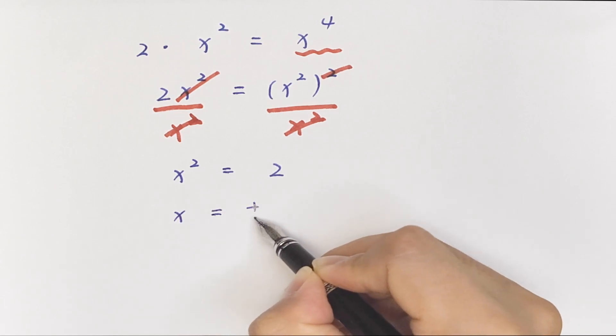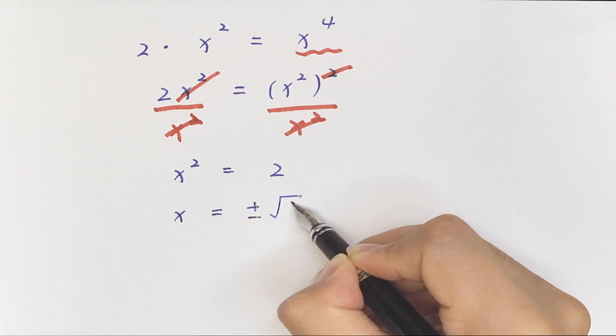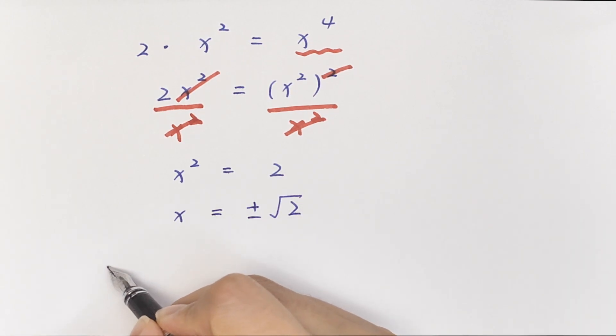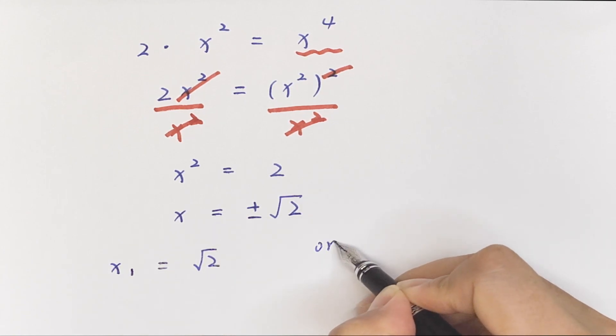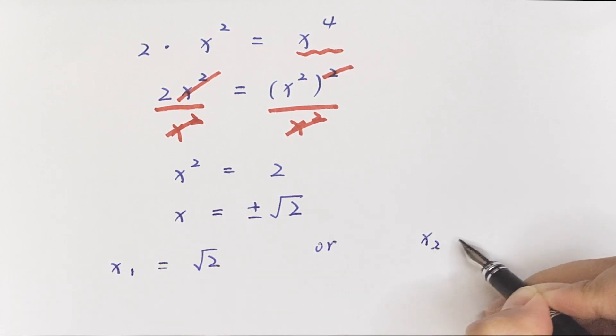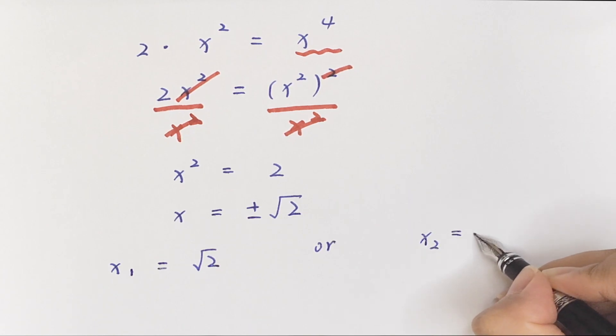So x equals plus or minus square root of 2. The final answer is x equals square root of 2 or x equals negative square root of 2.